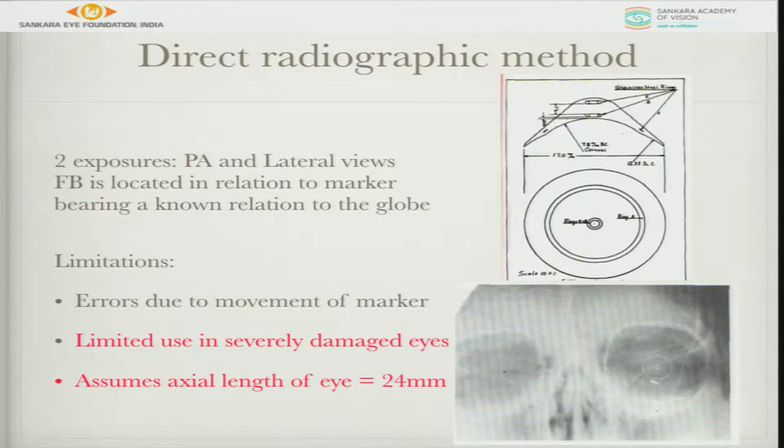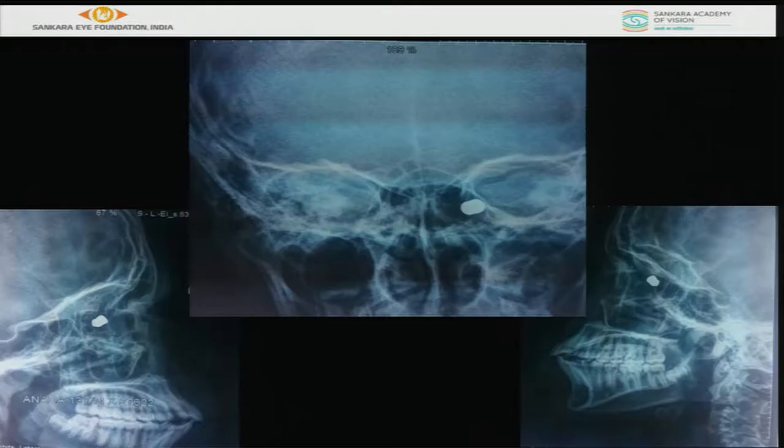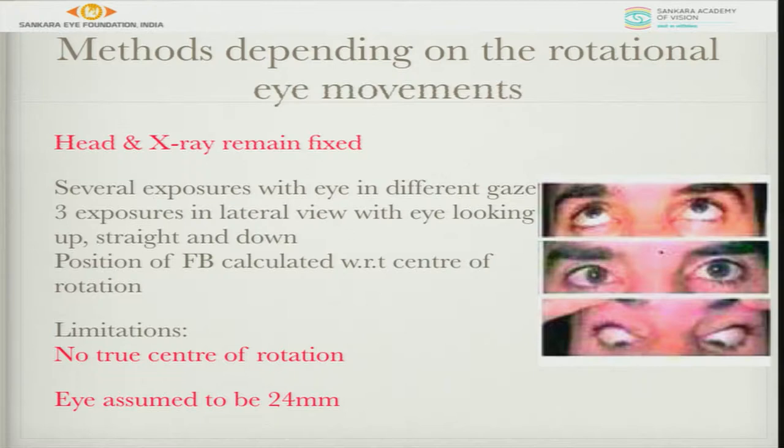The assumption is that the actual corneal diameter corresponds to a standard measurement, but you would still miss it. As in this case, you can understand the foreign body is somewhere extraocular — near the edge of the orbit — rather than intraocular. Other methods ask the patient to move the eyes up, down, and straight gaze, and then take X-rays, but assumptions remain.